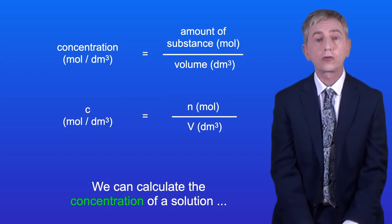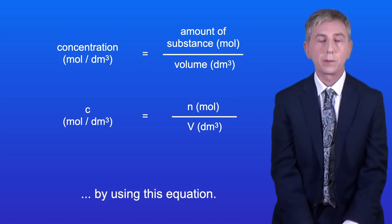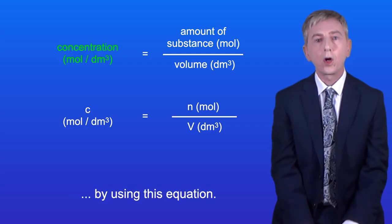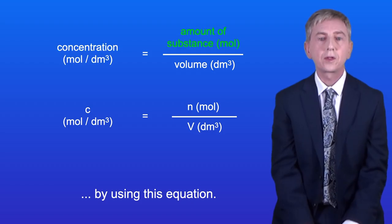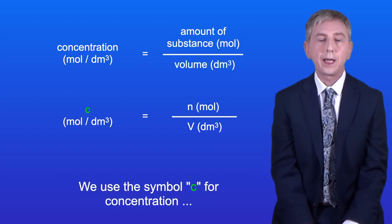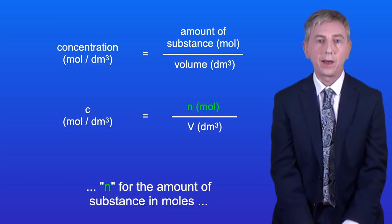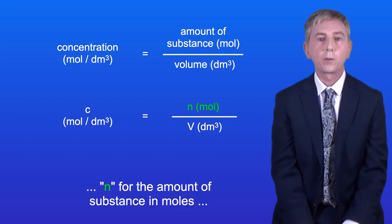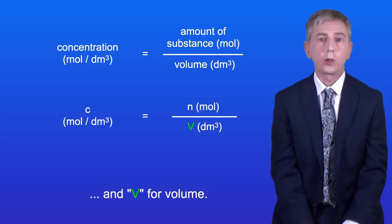We can calculate the concentration of a solution by using this equation. The concentration in moles per decimetre cubed equals the amount of substance in moles divided by the volume in decimetres cubed. We use the symbol lowercase c for concentration, lowercase n for the amount of substance in moles, and uppercase V for volume.